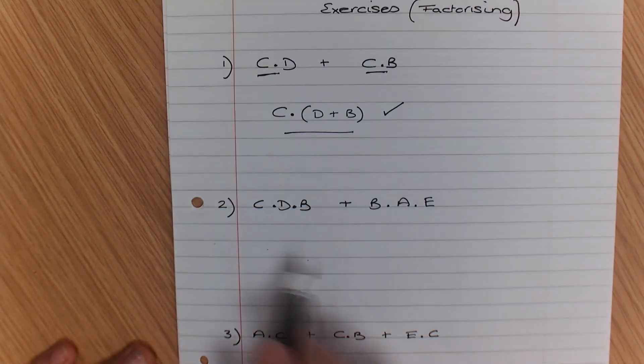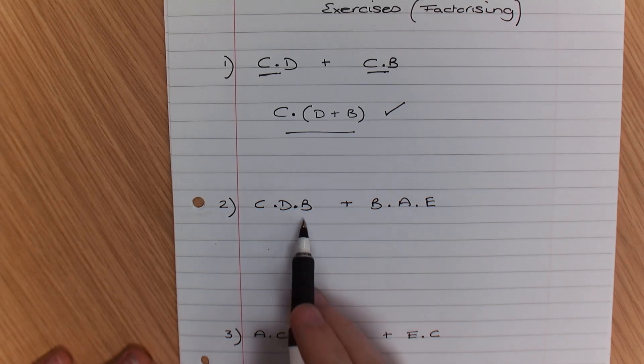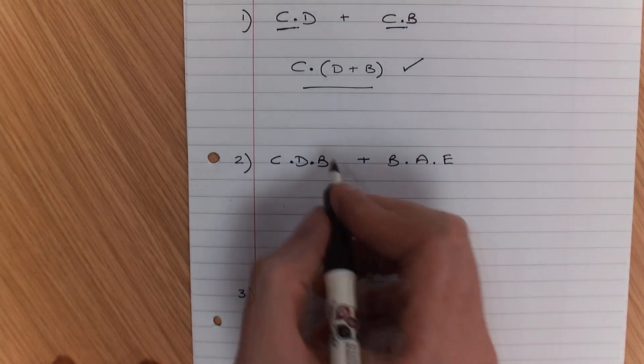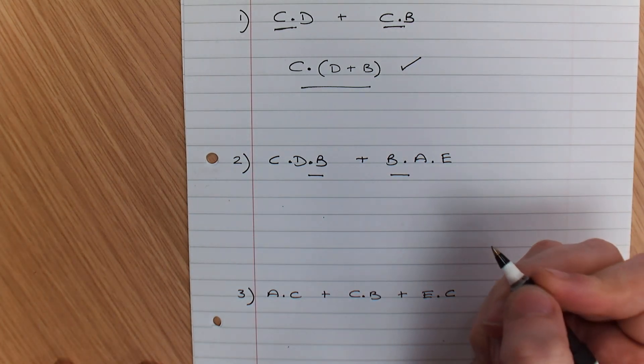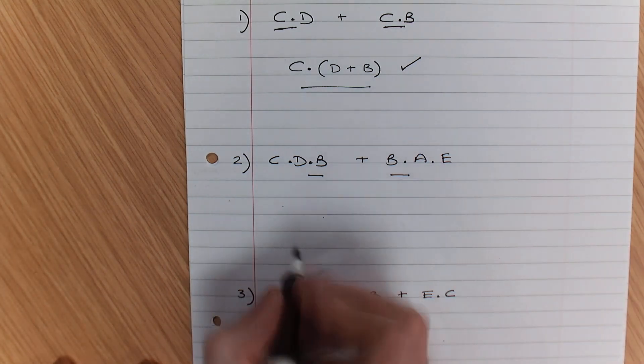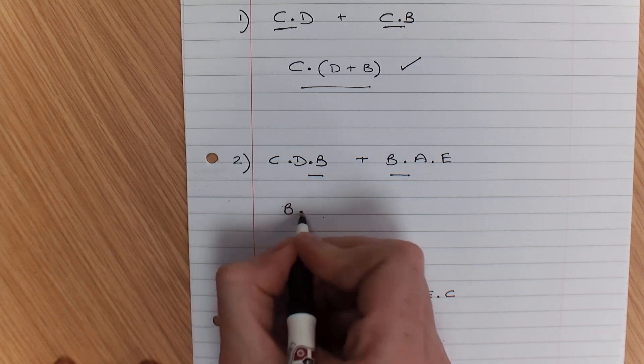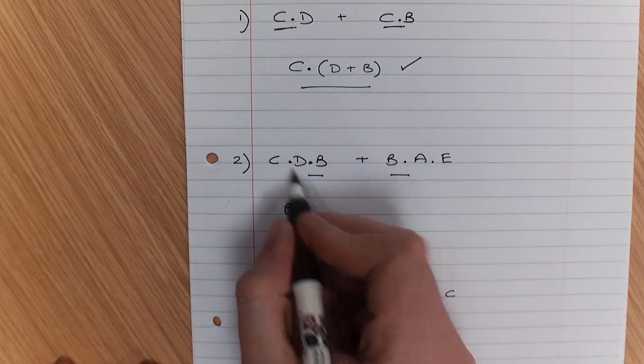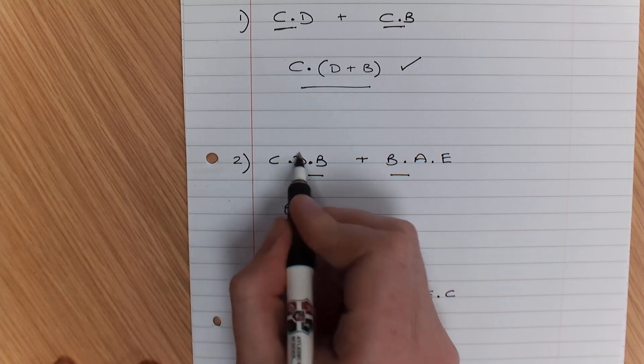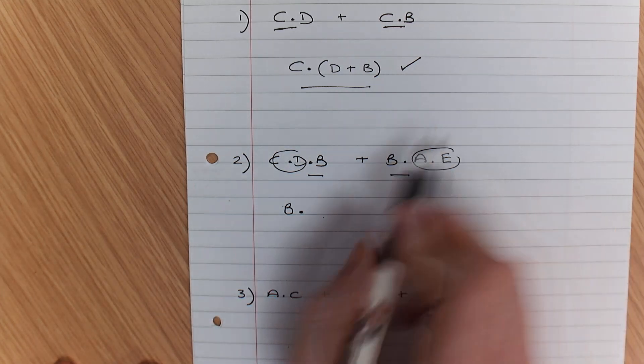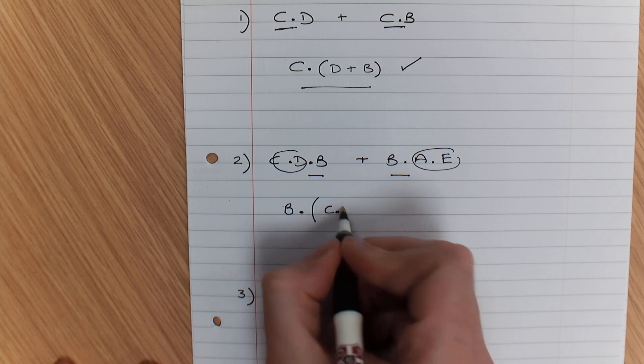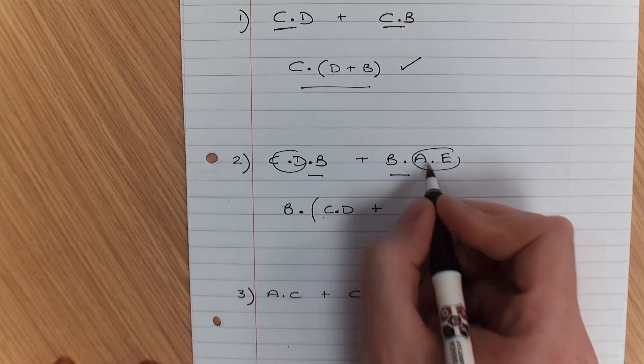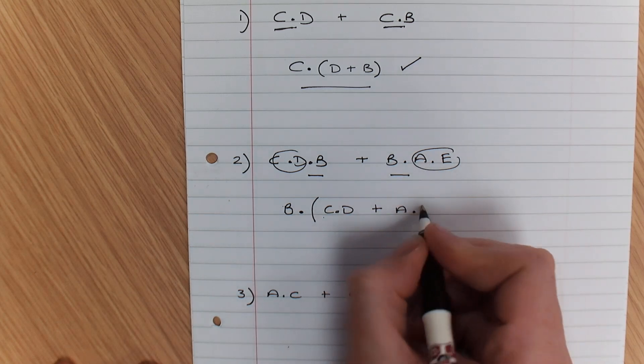Now we've got this one over here. It's slightly different because it's in a different order, but the common factor here is B. So B, and I'm going to open my brackets and do the two separate expressions that are left over. So B and (C and D or A and E).